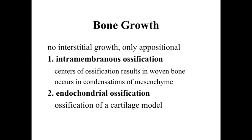What we're going to have is only appositional growth. Appositional growth is growth on surfaces — we can look at growth on the external surface, or along the internal surface if there's a large marrow cavity opening, but it's always growth along a surface, depositing bone on top of an existing surface.